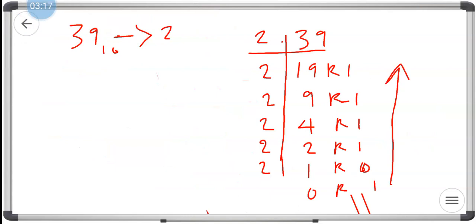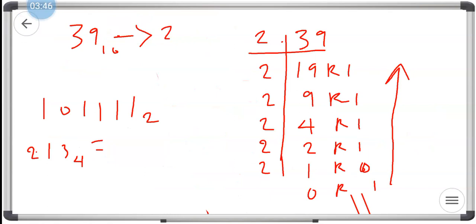Reading the remainders from bottom to top, we get 1 0 1 1 1 1 1 base 2. So converting 213 base 4: it equals 39 base 10, which also equals 1011111 base 2. That is the final answer to the question. Thank you for watching.